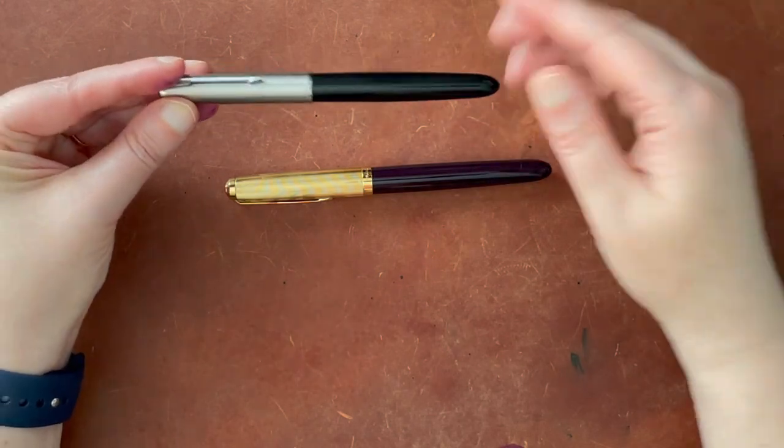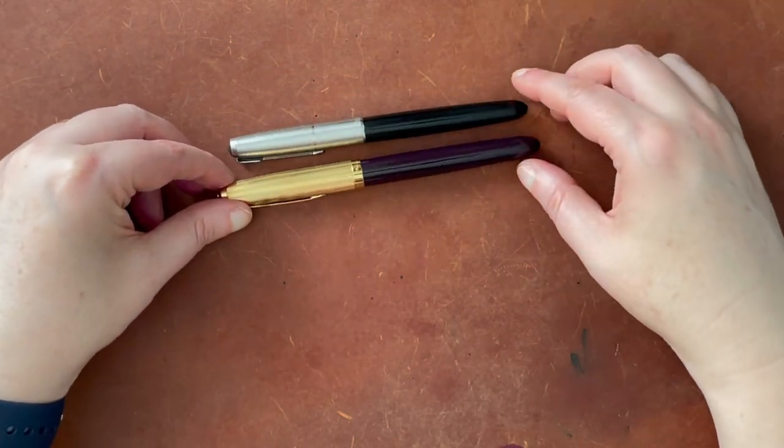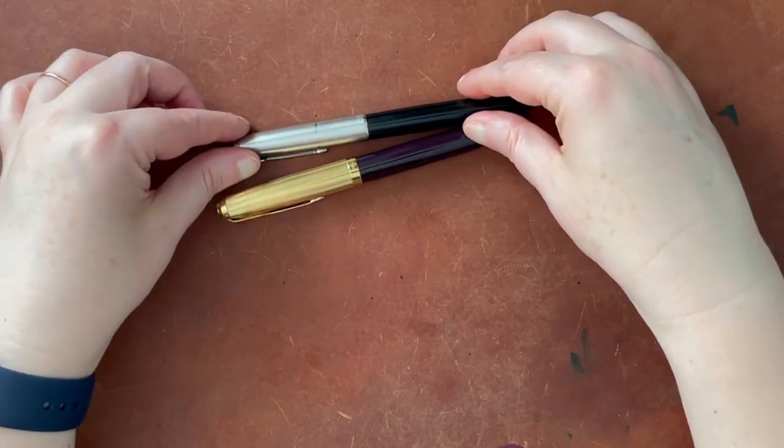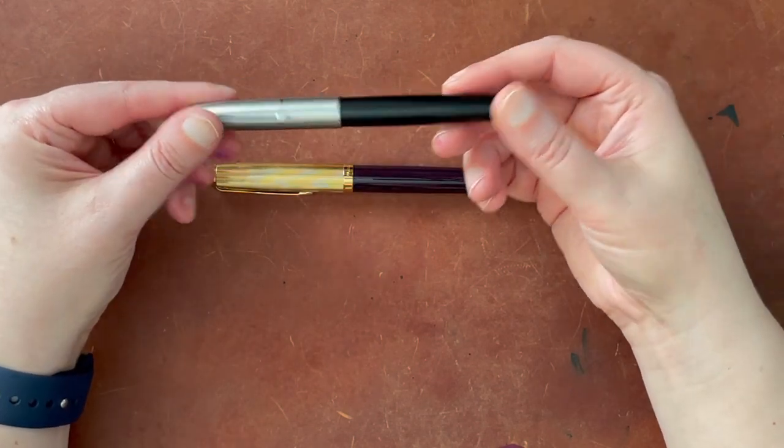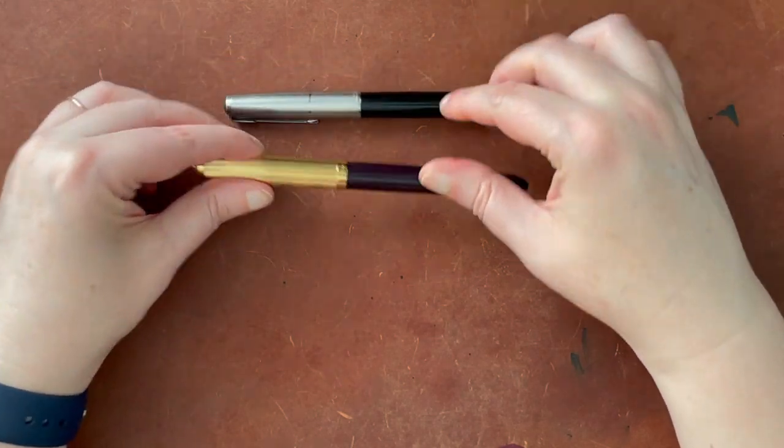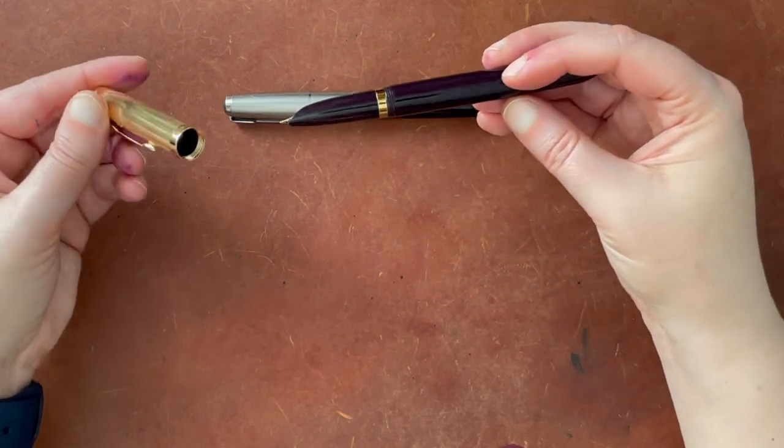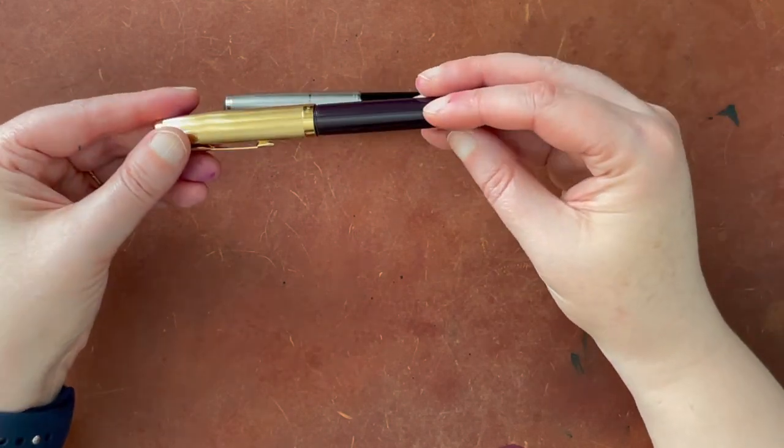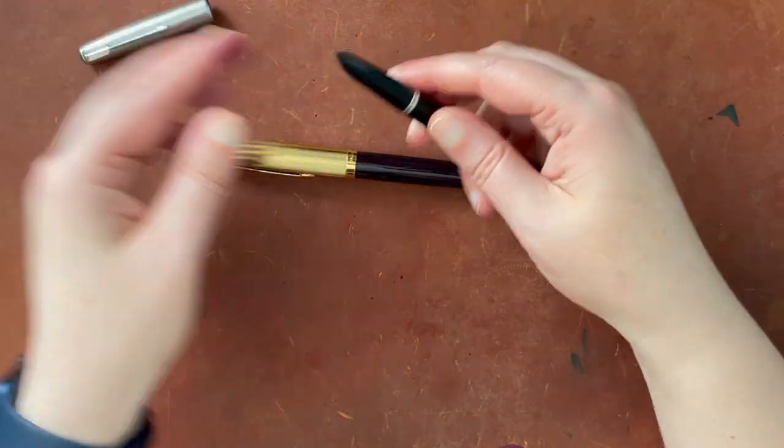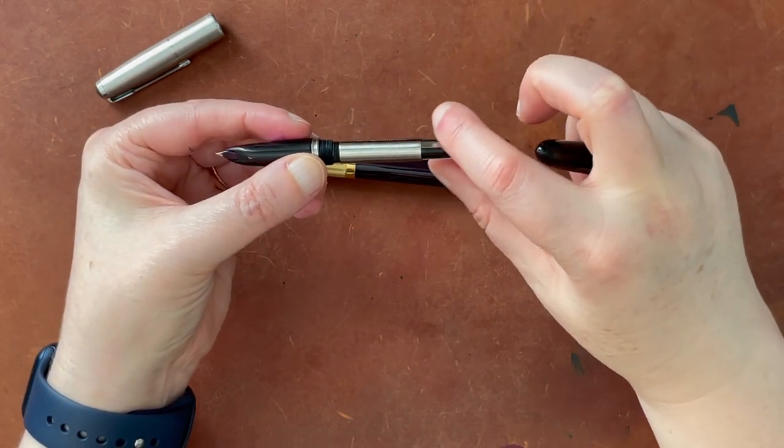I'll go through some of the changes and assuming I still have ink in here, I think I do, I will do a little writing sample comparison between these two. But essentially as you can see, the new one is a little bit longer. One of the largest differences that people have complained about is that the older Parker 51 is a pull cap, whereas the newer one, this is for both the gold and the steel, it is a twist cap.